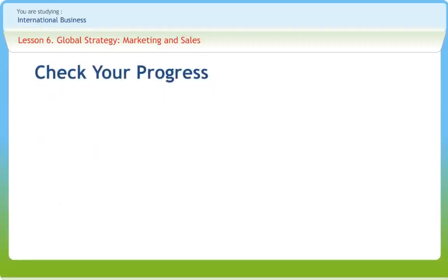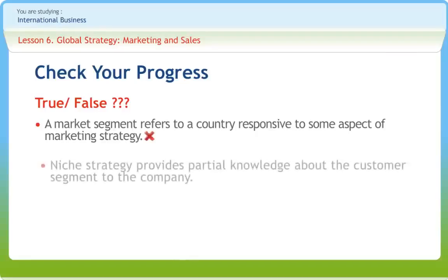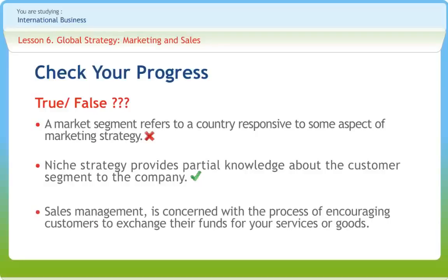Now let us check if we have understood the various concepts discussed in this lesson. A market segment refers to a country responsive to some aspect of marketing strategy — right or wrong? Wrong. Niche strategy provides partial knowledge about the customer segment to the companies — right or wrong? Right. Sales management is concerned with the process of encouraging customers to exchange their funds for your services or goods — right or wrong? Right.